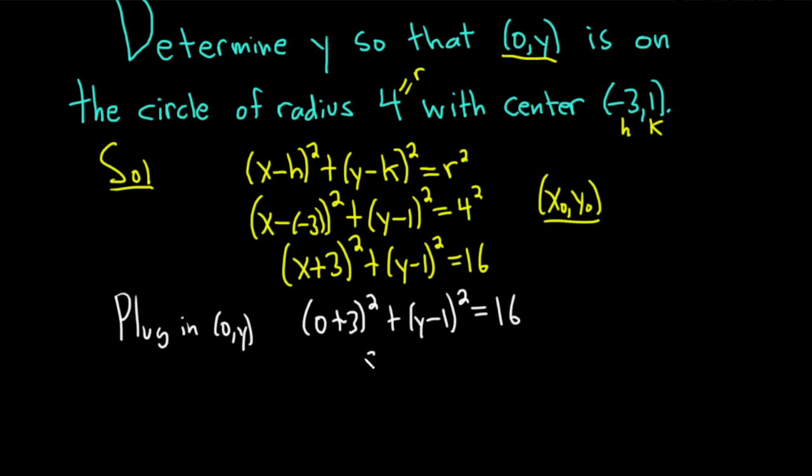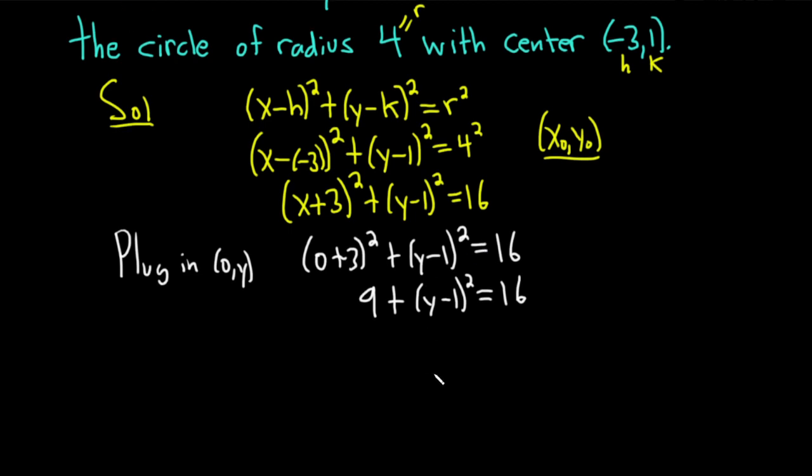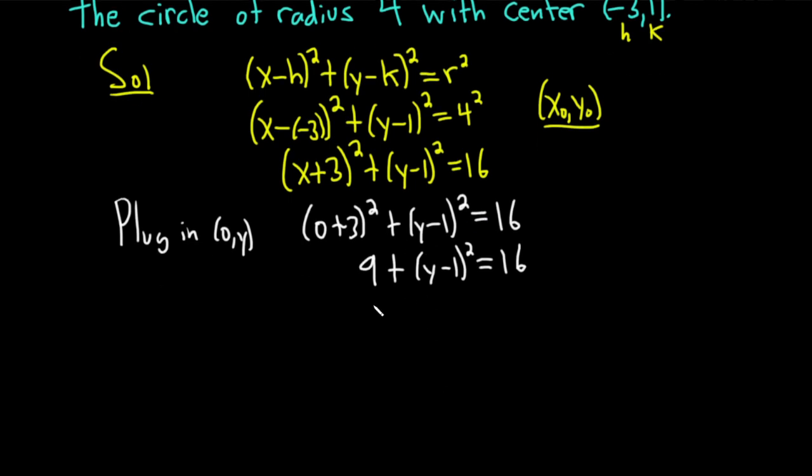This becomes 9 + (y - 1)² = 16. We have to solve for y, so subtract 9 from both sides. That gives us (y - 1)² = 7.